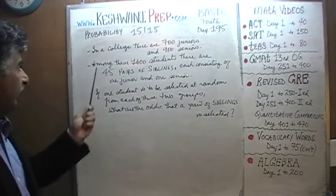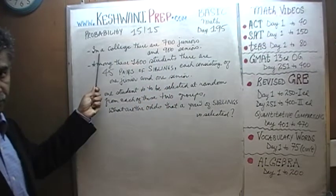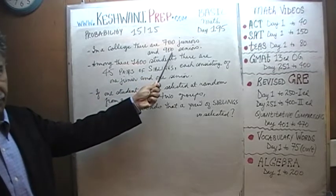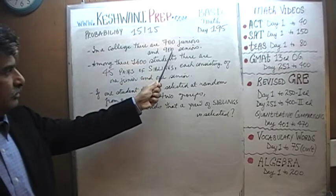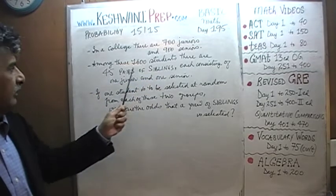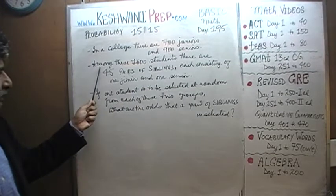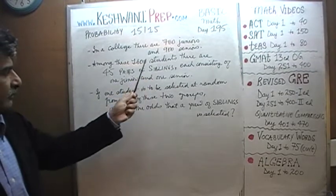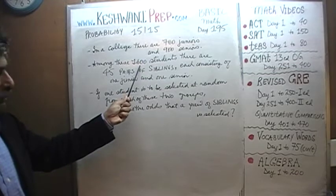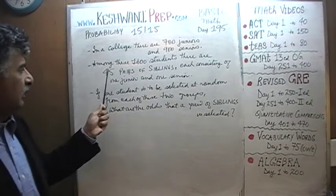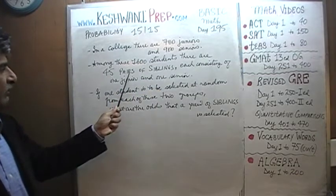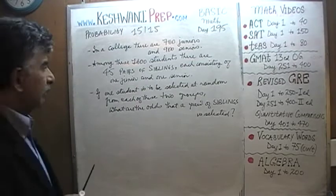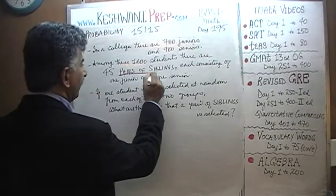It says that in a college there are 700 juniors and 900 seniors. Among these 1,600 students — 700 plus 900 — there are 45 pairs of siblings.